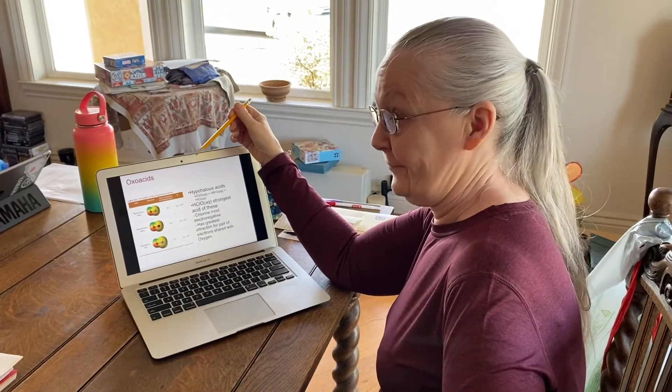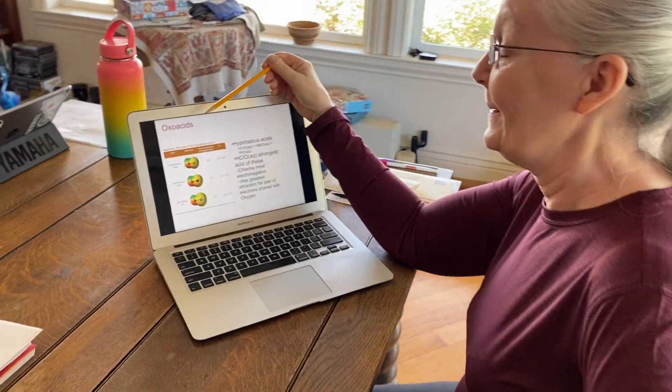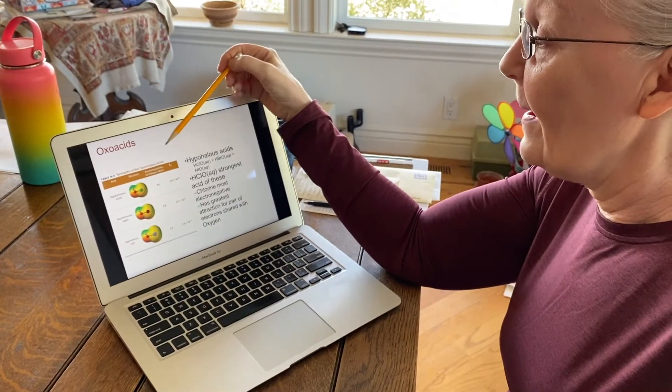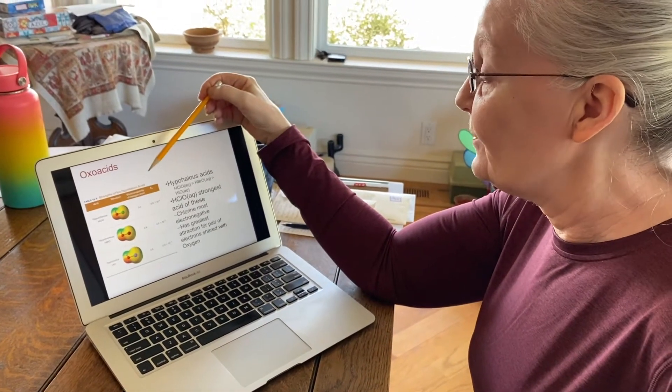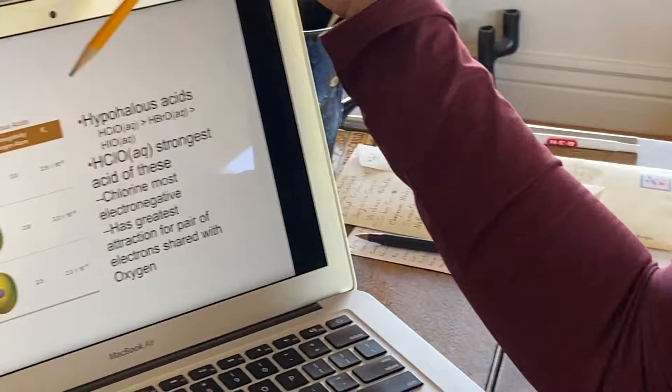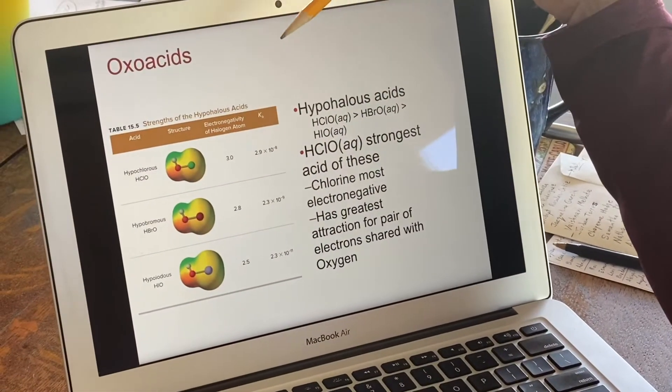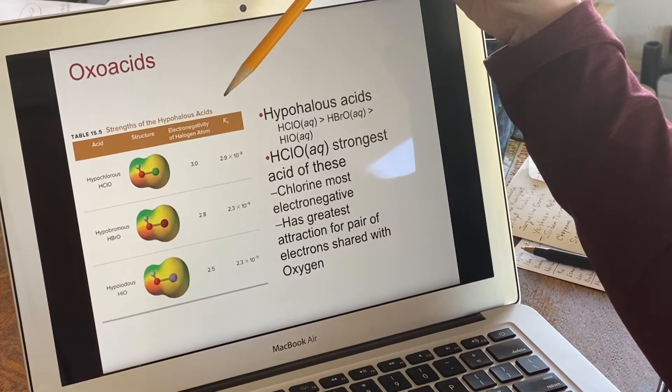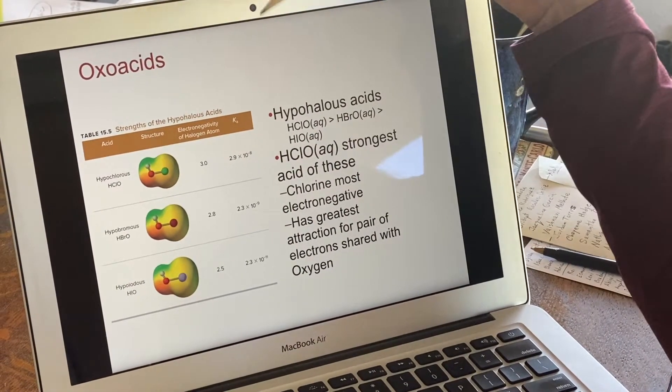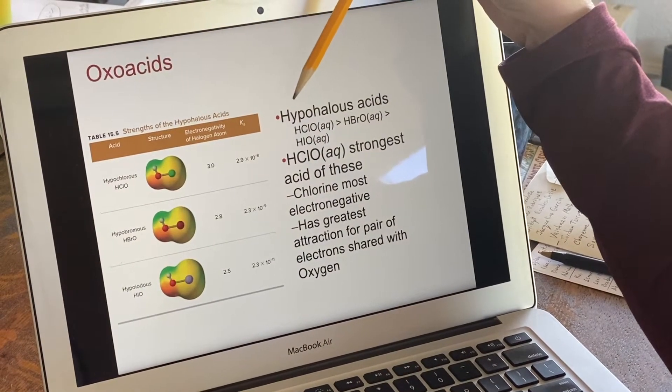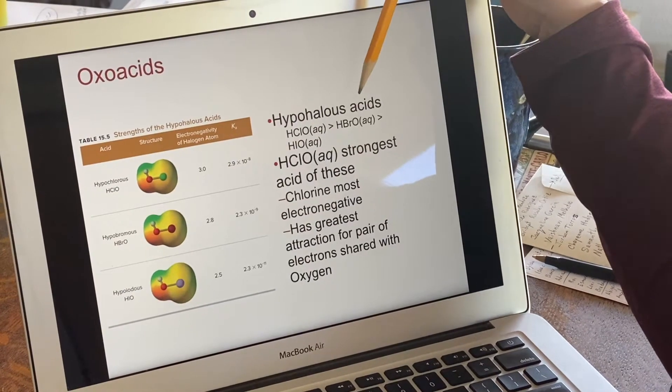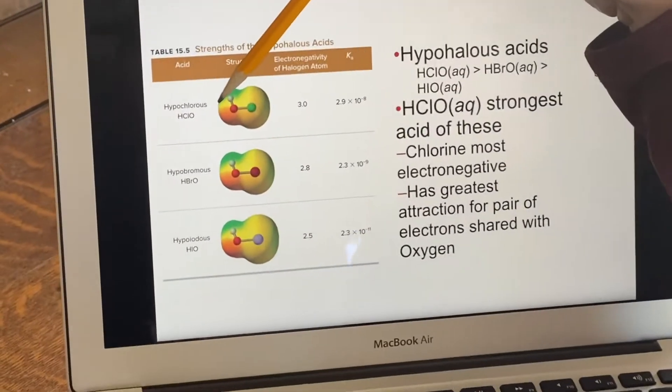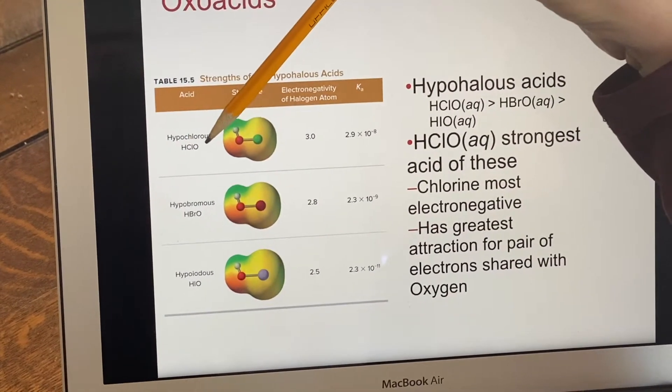Returning to chapter 15 and starting on this slide labeled oxyacids, we're going to talk about the various strengths. You can see that all of these are weak acids. We know there's really only seven strong acids, so it's not a surprise that all of these are weak acids. Here we're going to talk about what are called the hypohalous acids. They all start with the word hypo and end with -ous because they're set up so